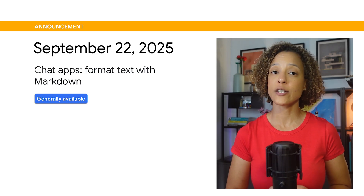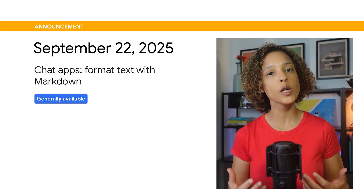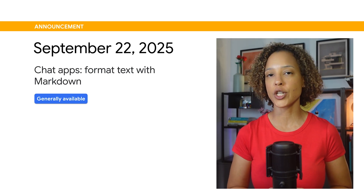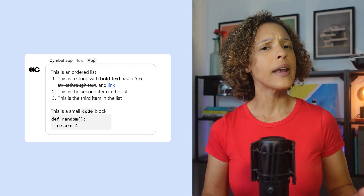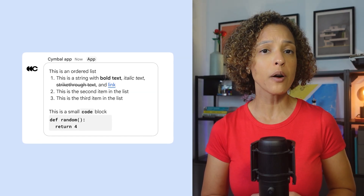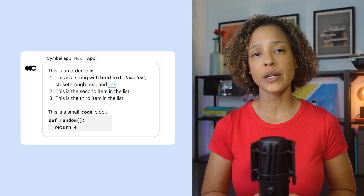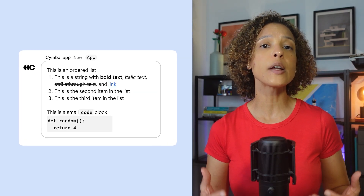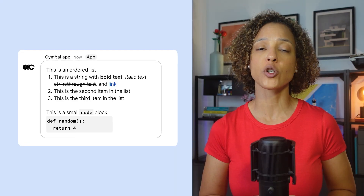You can now format text with Markdown, including lists and code blocks in your chat apps. Markdown support can help simplify the process to build cards and is especially critical if you're building AI agents, since the standard output for many LLMs is Markdown. Now, instead of converting the Markdown to HTML, you can pass the entire Markdown to Chat, which will handle and render the text correctly.